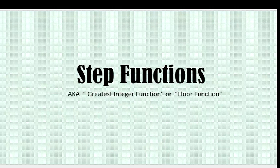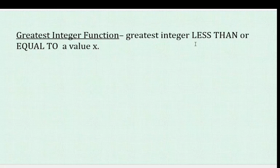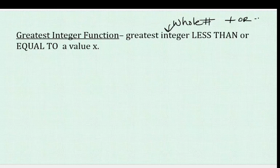The greatest integer function — here's the definition you need to write down and learn. It means the greatest integer less than or equal to an x value. Remember what integer means: integer means a whole number, and it can be positive or negative. Whole numbers — positive and negative — that's what makes up integers.